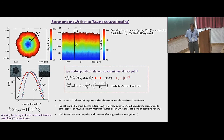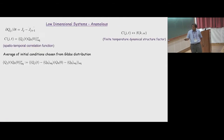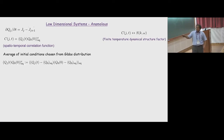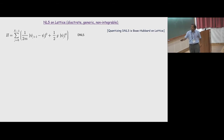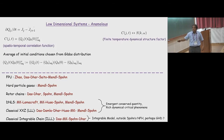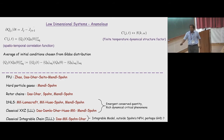We are looking for spatiotemporal correlations such as C(x,t) or its Fourier transform S(k,ω), called the finite-temperature dynamical structure factor. There are several works on such correlation functions. I'm going to focus on DNLS as the non-integrable system and classical XXZ, and the integrable lattice Landau-Lifshitz chain.